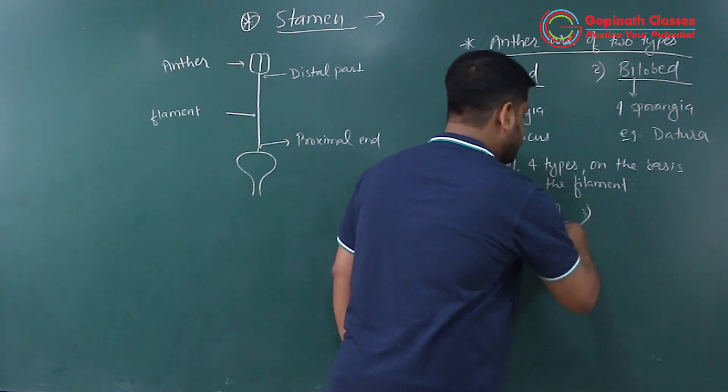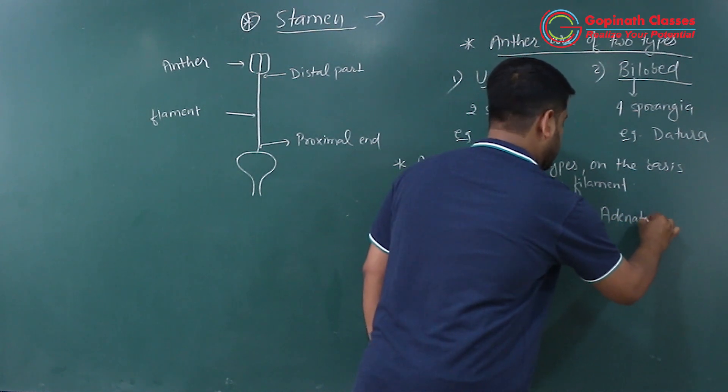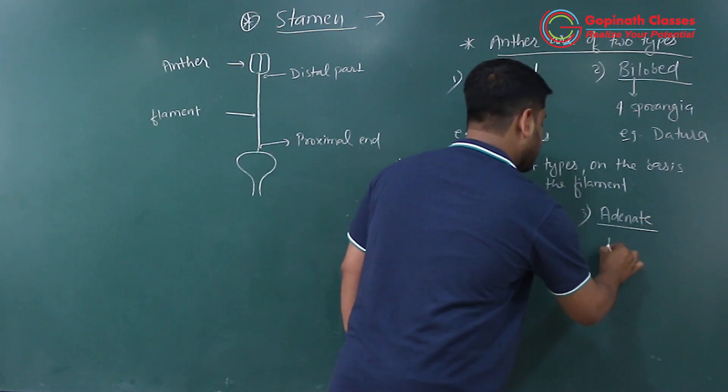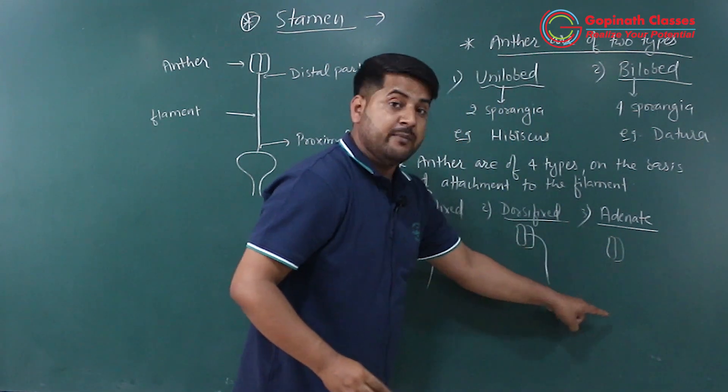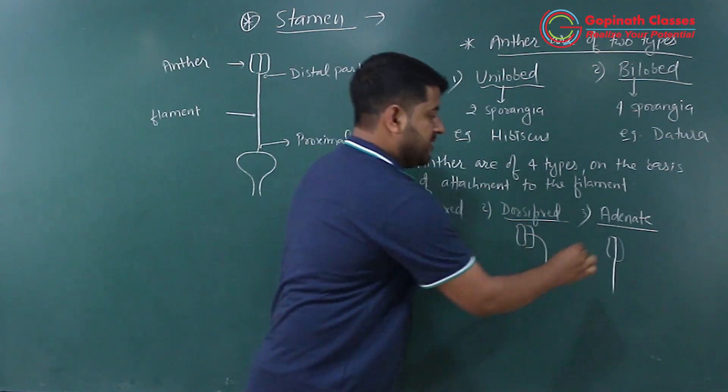The third one is adnate type. Means if this is the anther and it's completely attached to the filament in this way, this is adnate type.